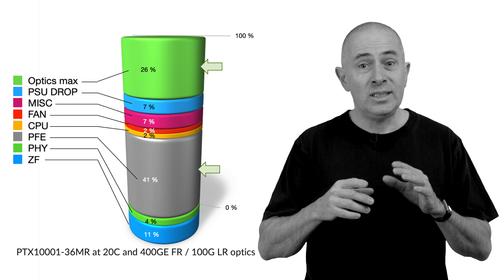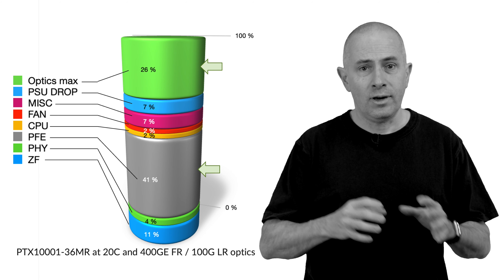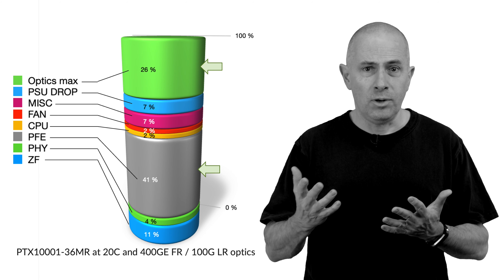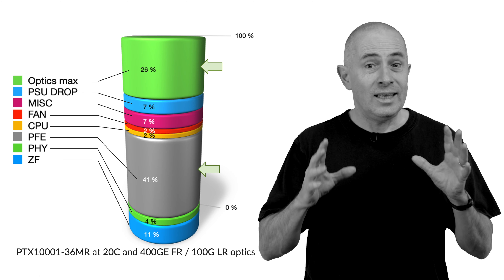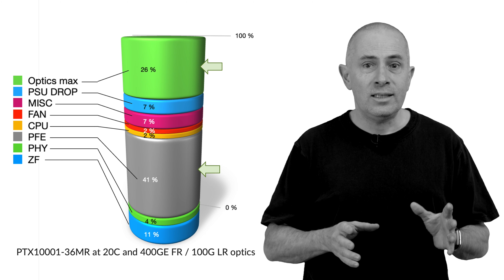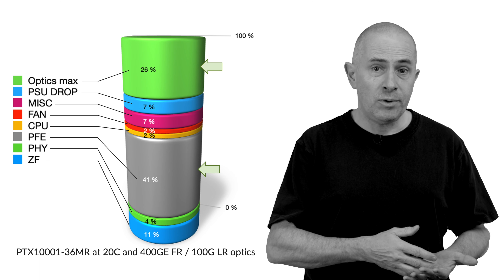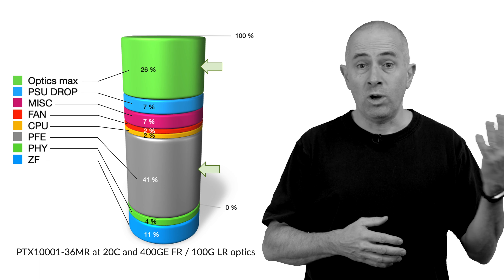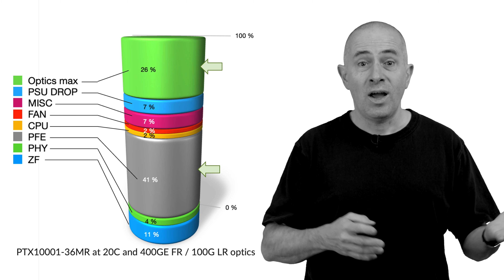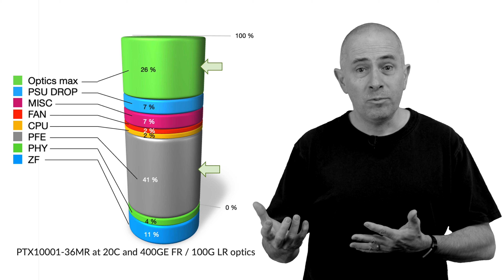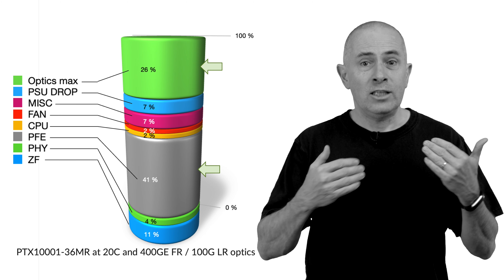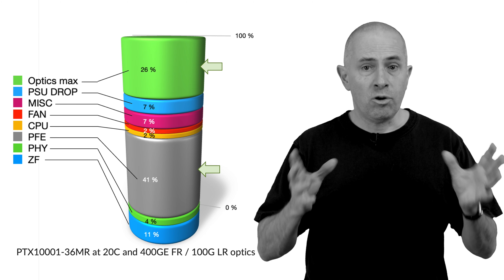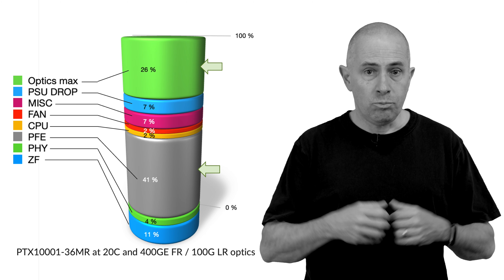In this case, the optics are just FR and LR, not even ZR or ZR+. You can easily imagine that in future generations — 800GB or 1.6T with high power optics — that will require more energy than any other component in your box.